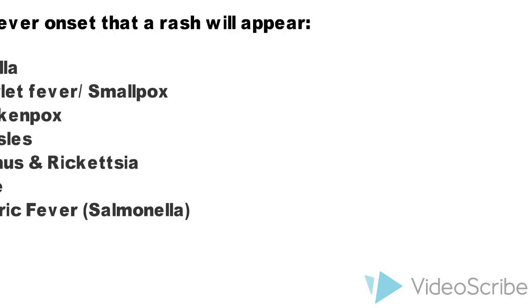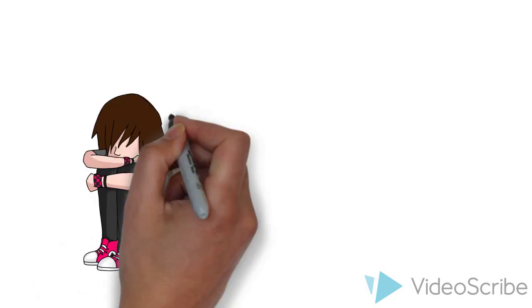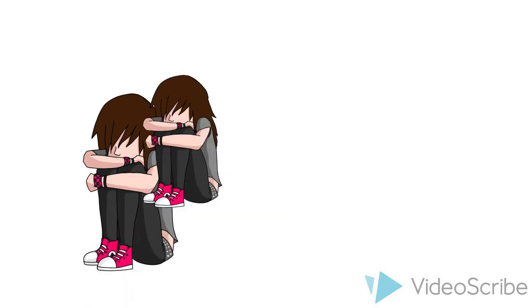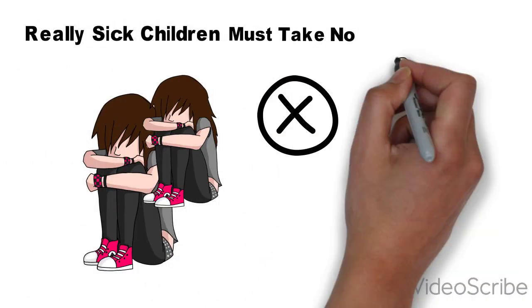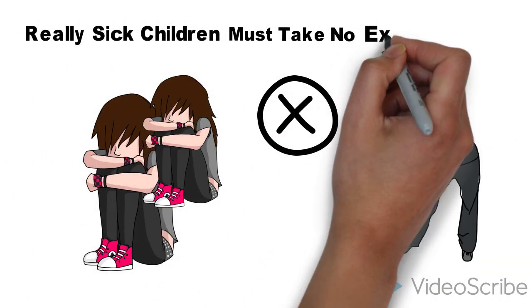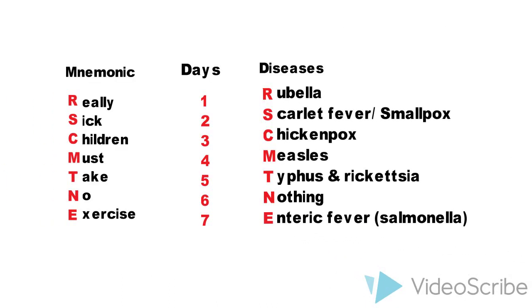This is a quick and easy trick to learn and remember. You just have to remember the sentence: 'Really Sick Children Must Take No Exercise,' where the first letter of each word represents a disease in the increasing order of days from 1 to 7, as shown in this slide.